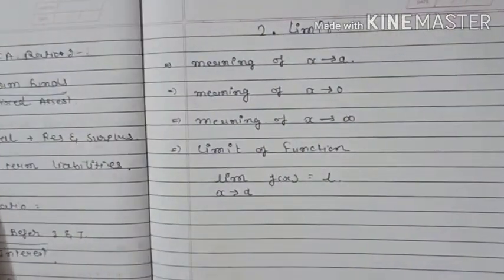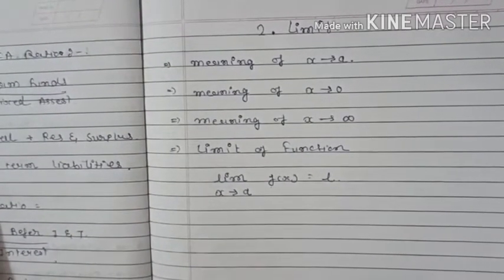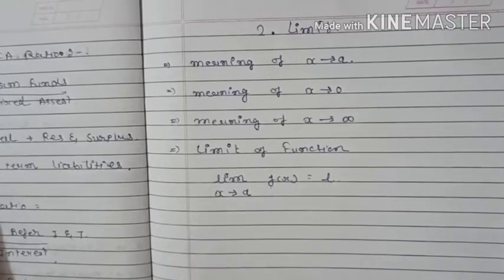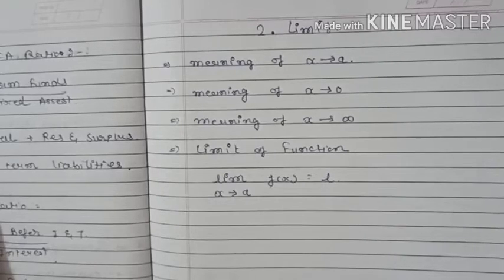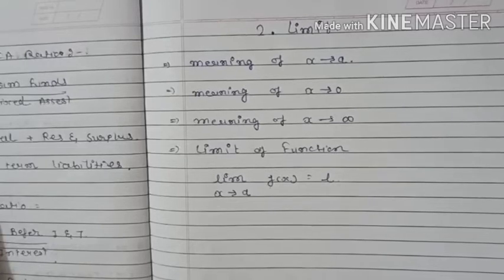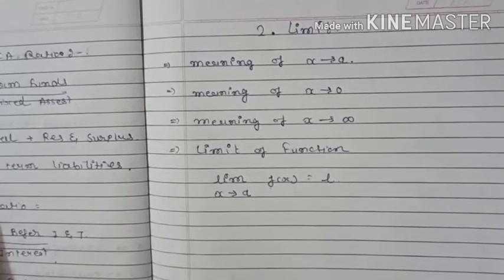Before we start the limit, first we have to learn some basic definitions. In the earlier chapter of statistics we discussed what is a function, and we were putting a value of x in that function to find the answer. But in limits, instead of putting an exact value like x = 2, it creates a boundary or limit for the value of x near to a.